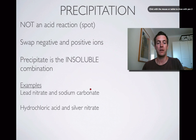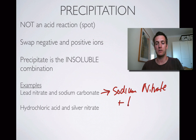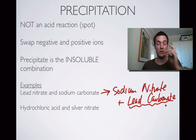Here are a couple of examples. Lead nitrate and sodium carbonate: we swap the positive ions so we'll end up with sodium nitrate and lead carbonate — because we've just swapped the ions around. In this case the lead carbonate would be our precipitate because we can look up on our data sheet that it's an insoluble compound.